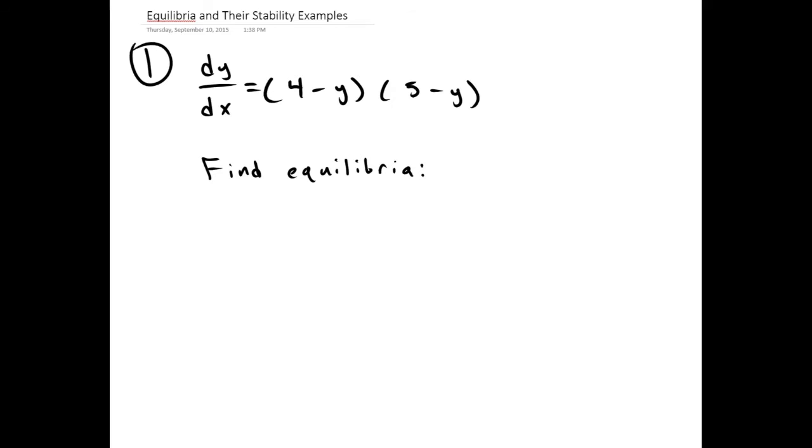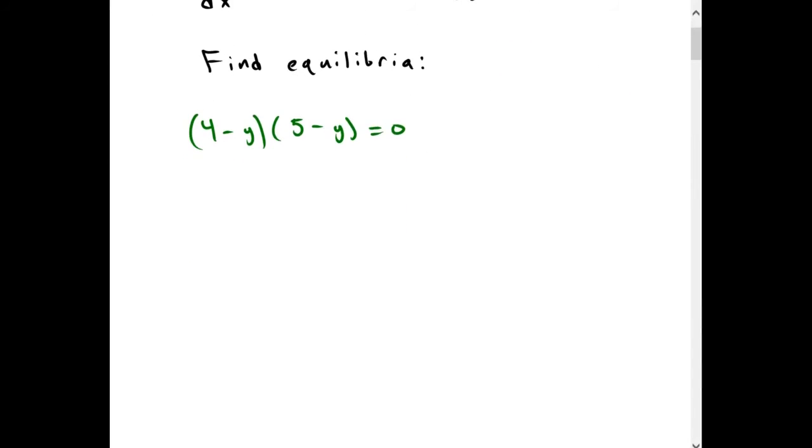So what we do is we set dy/dx equal to 0. So we're setting (4 - y)(5 - y) equal to 0. And this gives us 4 - y equals 0 and 5 - y equals 0. And solving this we get y equals 4 and y equals 5.